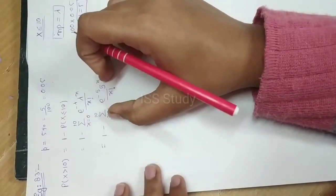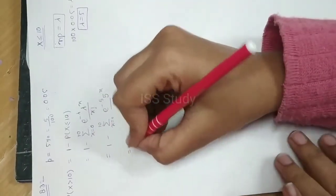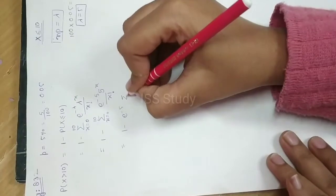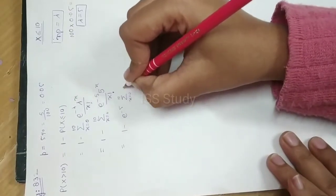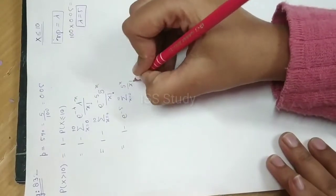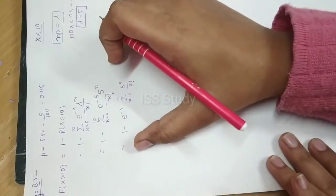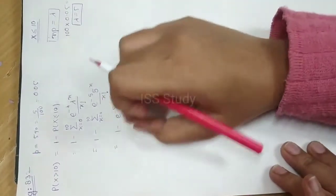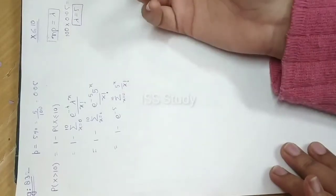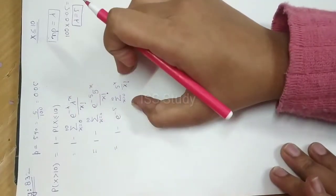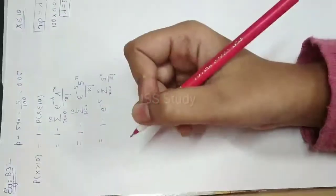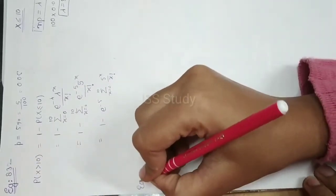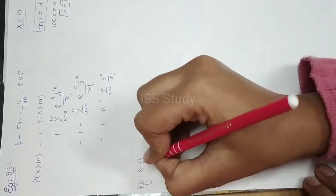Since e to the power minus 5 is a constant, you can take it outside the summation. For the exam, you will need to find the numerical answer and adjust accordingly. I hope you understand this example. The next example is 8.33.